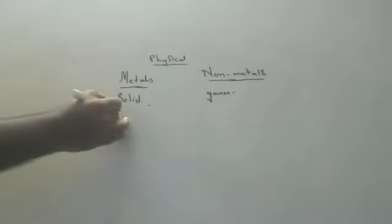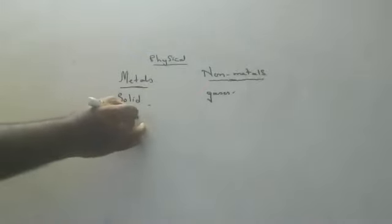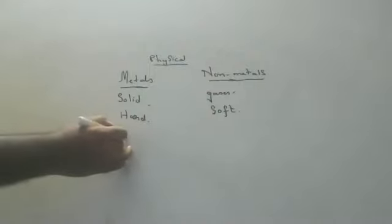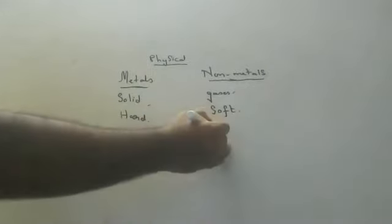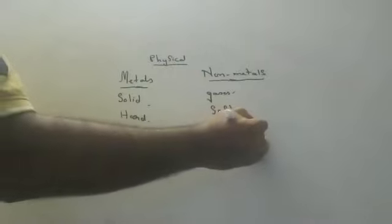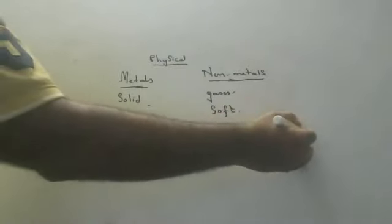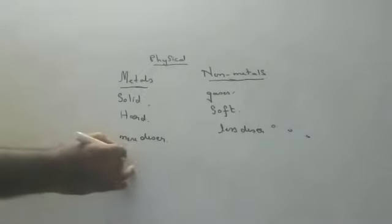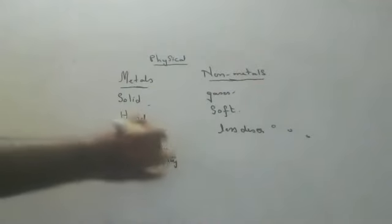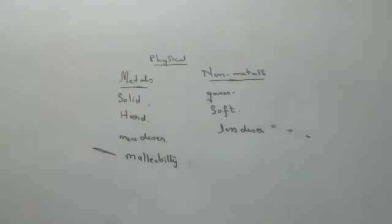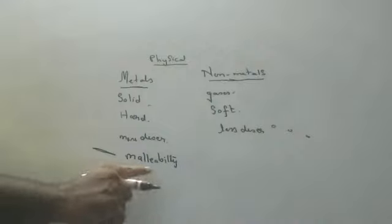That is the first difference. Next, because metals are solids, they will be hard. Because non-metals are gases, they will be soft. Metals are more dense because they are solids. Non-metals are less dense because they are gases — molecules are very far apart. Metals are malleable. Malleability is the property of metals by which we can beat them into sheets — iron sheet, gold sheet, silver sheet, copper sheet.